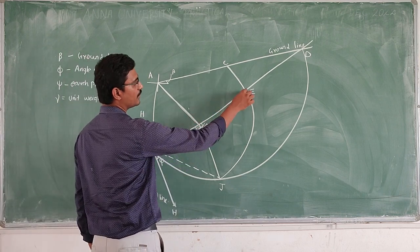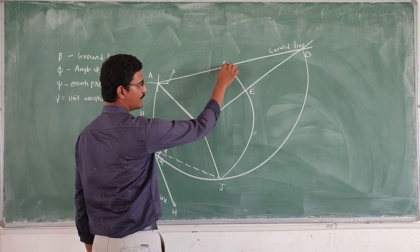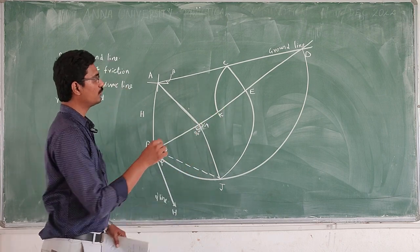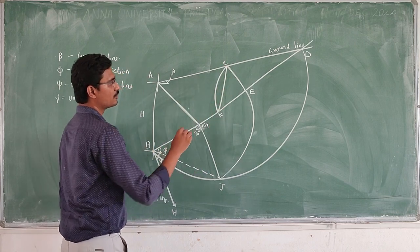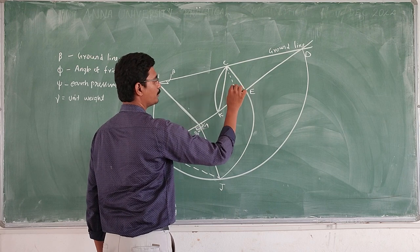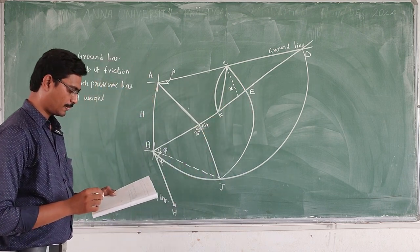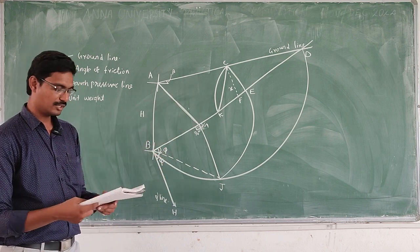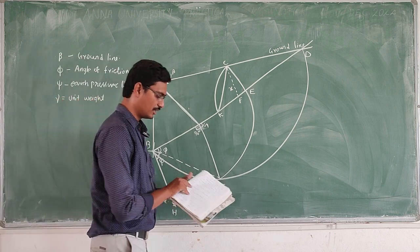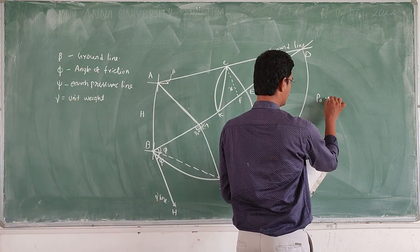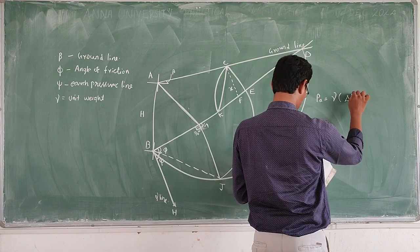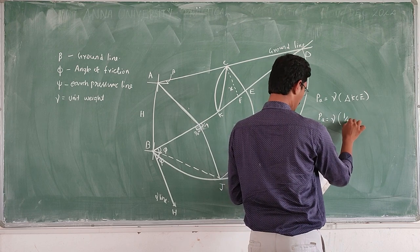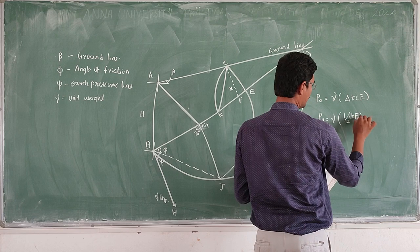Now we take EC as the radius and draw an arc. This new point is K. We connect C and K. Then we draw the perpendicular line, labeled X, at point KE. This point is F. These are all the constructions we need to draw. After that, we can find the active earth pressure using the relation: PA = gamma × area of triangle KCE, which gives PA = ½ × gamma × KE × X.